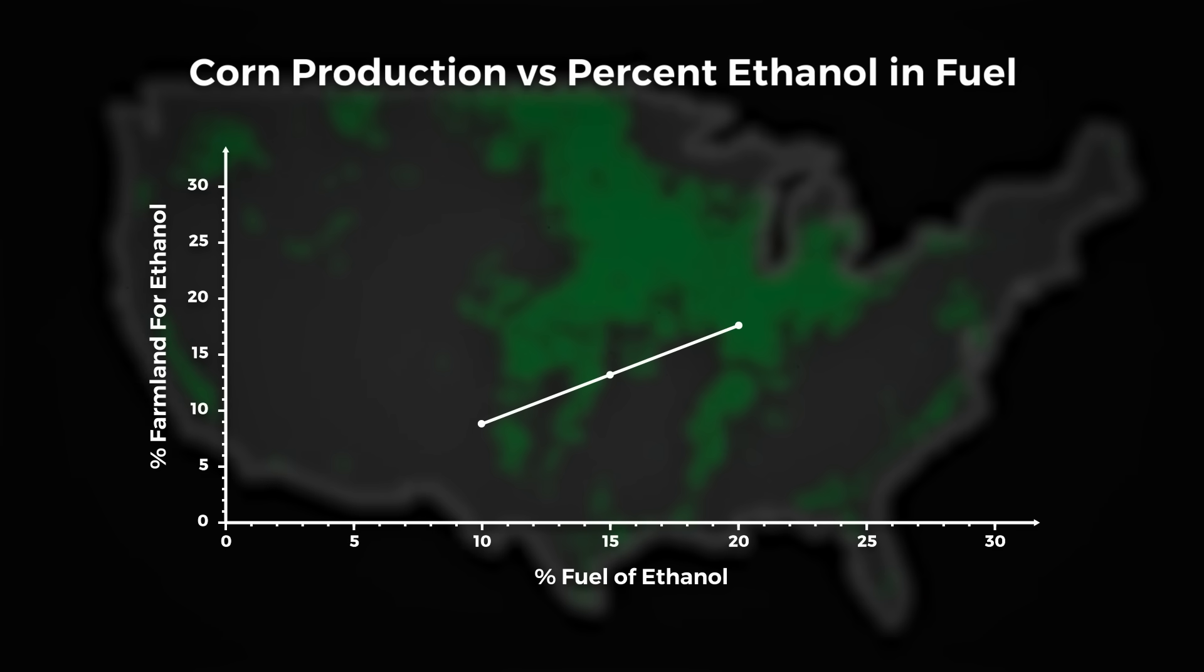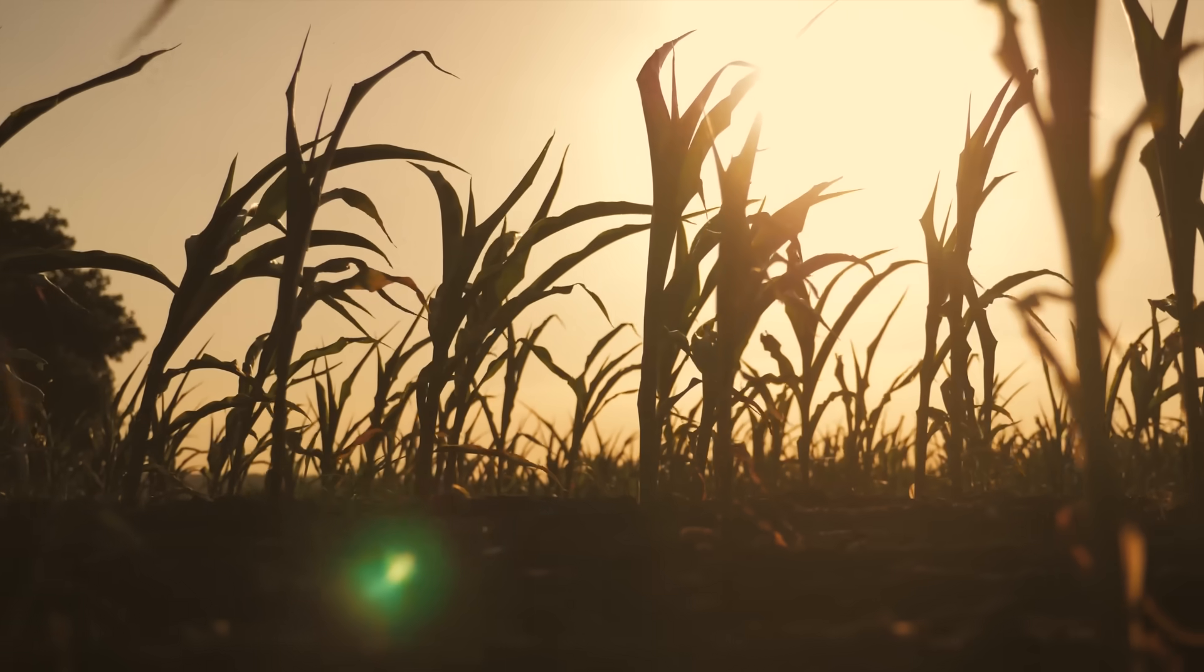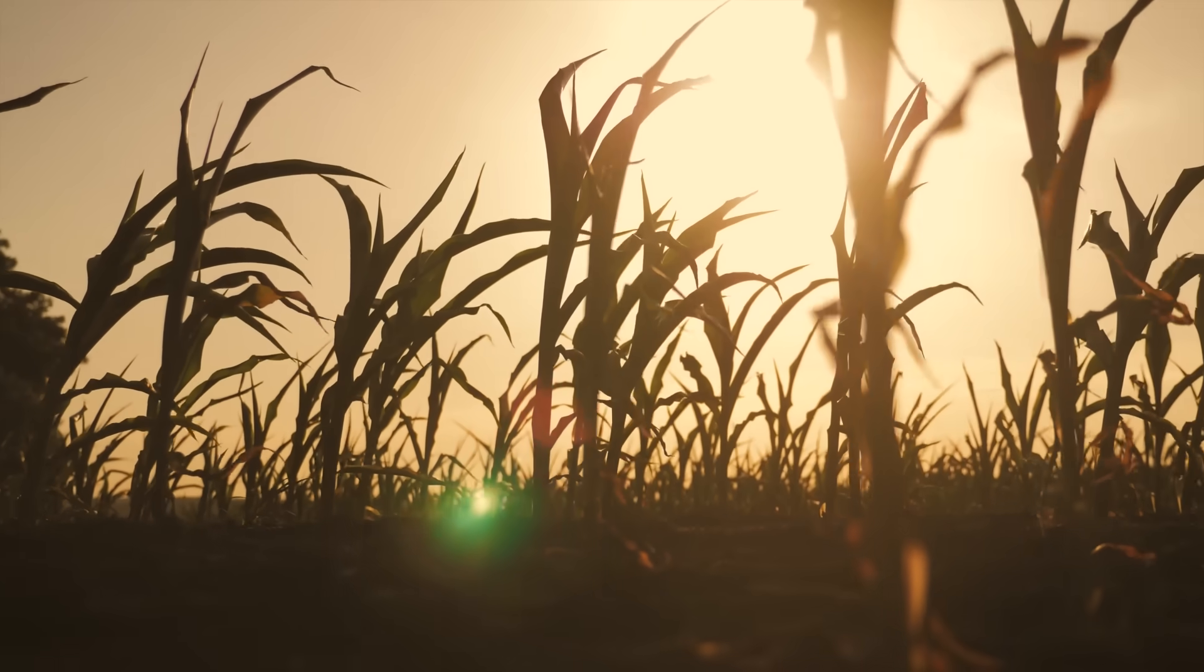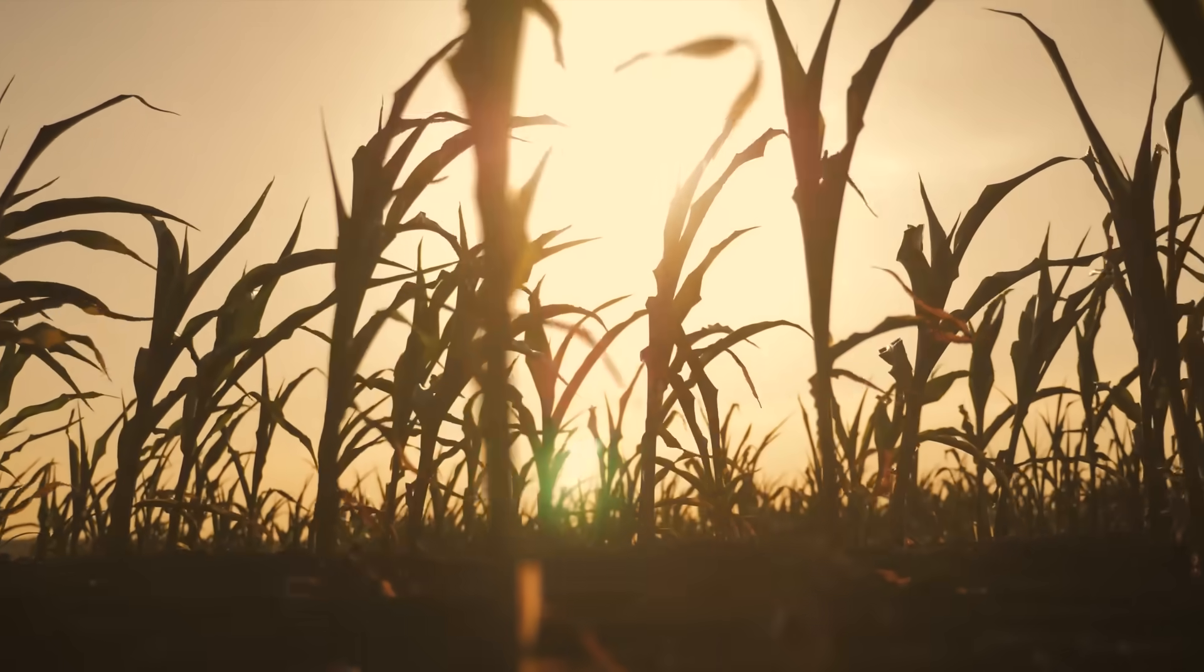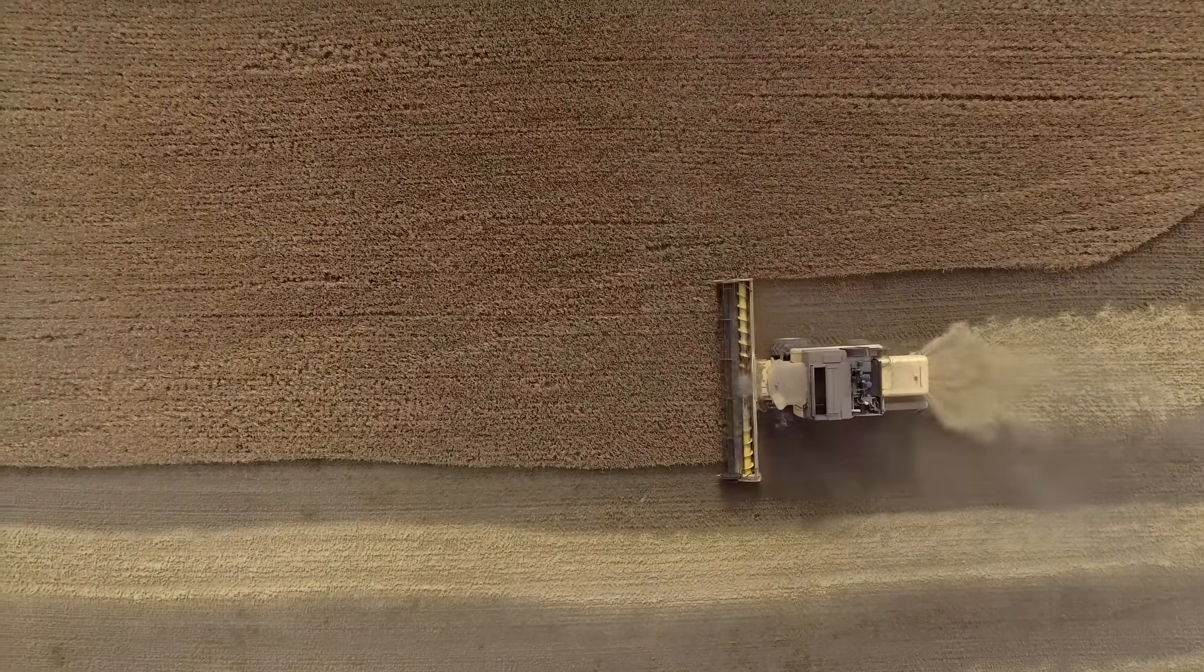The ethanol industry wants that figure to rise to 15% and ultimately are targeting 20%. Extrapolating that 8.8% farmland figure, we can see that it would take around 17.6% of the current total farmland in the United States to achieve 20% at the current gasoline usage. Nearly one fifth of all of the United States farmland devoted to making something we can't eat seems extreme, and we can already see the effects a fraction of that number is having.